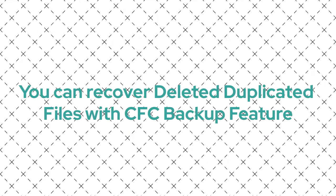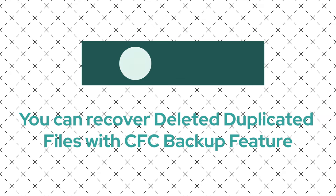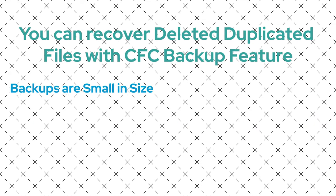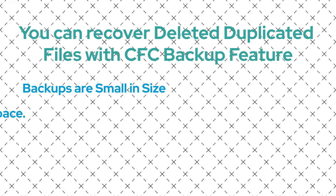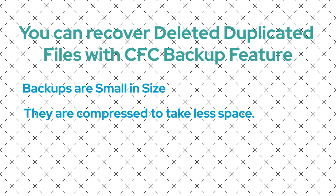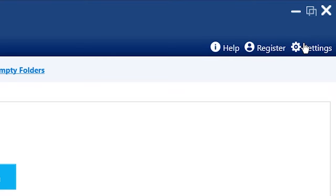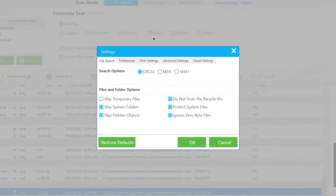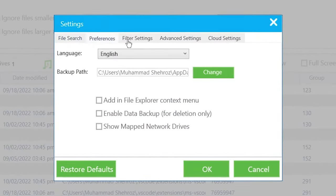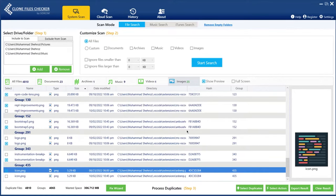Backup Feature: CFC has an optional Backup Feature. If you've turned on the Backup Feature, your duplicate files can be recovered even after you delete them. The backups are small in size — they are compressed to take less space. To activate backups, click on Settings, click on the Preferences tab, check the option Enable Data Backup for deletion only, and click OK.